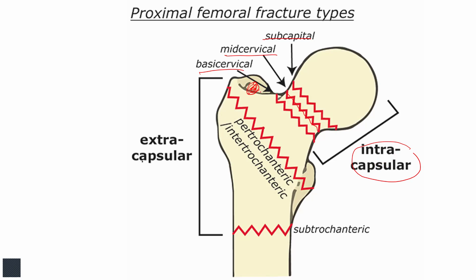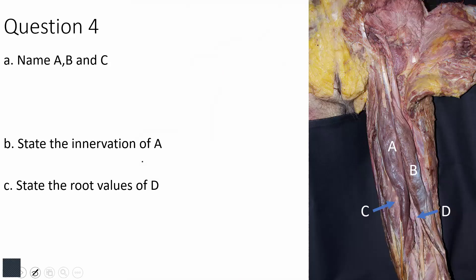The most important artery in the trochanteric anastomosis is the medial circumflex femoral artery, which gives retinacular arteries that pass through the neck. These arteries are bound to the femoral neck, so when a fracture occurs, they are damaged, compromising blood supply to the head of the femur and causing avascular necrosis. Note that the blood supply in children is different — please go and read about that separately.